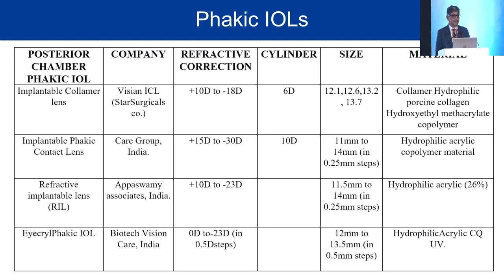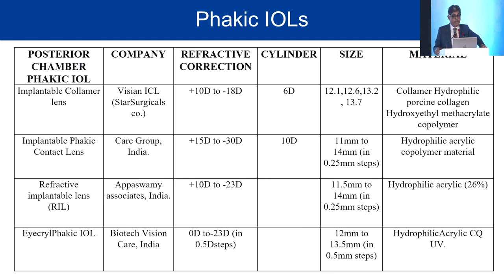Regarding available lenses: the foremost is the STAAR Surgical Visian ICL, available from plus 10 to minus 18 diopters, correcting cylinder up to 6 diopters, available in sizes 12.1, 12.6, 13.2, and rarely 13.7, made of Collamer material. The CARE Group's IPCL can correct from plus 15 to minus 30 diopters, correct 10 diopters of astigmatism, sizes from 11 to 14 mm in 0.25 mm increments, made of hydrophilic acrylic.